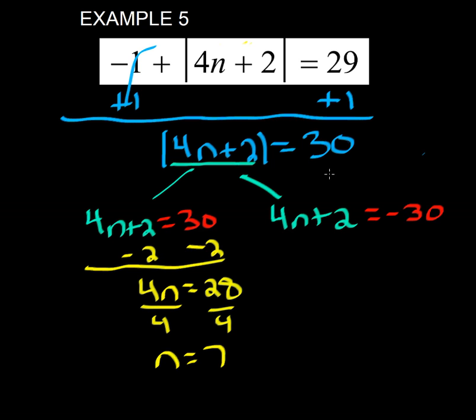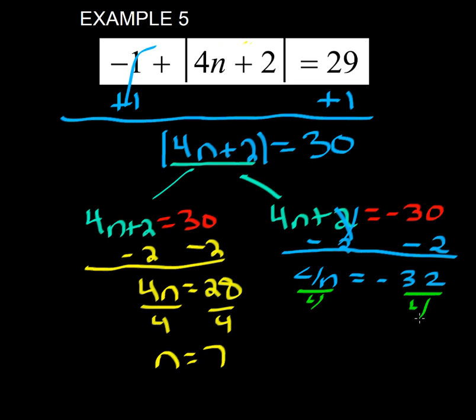The first one is solved. Now I'm going to come over to the second one. I'm going to subtract 2 from both sides. We get 4n equals negative 32. I'm going to keep solving. Divide by 4. Notice how I keep doing the same thing over and over? We get n equals negative 8.